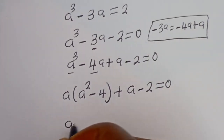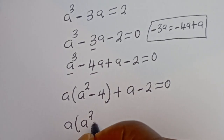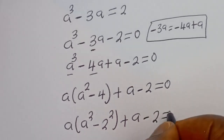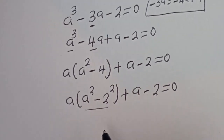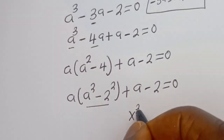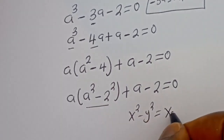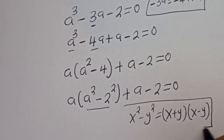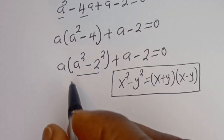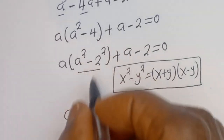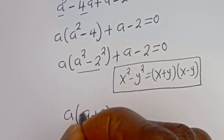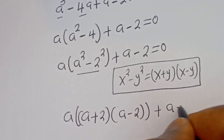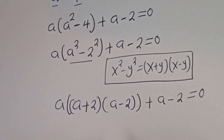Now we have A times the bracket A squared, and this minus 4 can be written as minus 2 squared, plus A minus 2, is equal to 0. This is in the form of a difference of squares: if you have X squared minus Y squared, this is equal to (X plus Y)(X minus Y). Then we have A times (A plus 2)(A minus 2) plus A minus 2, is equal to 0. So A minus 2 is common.